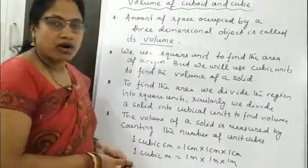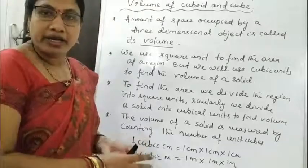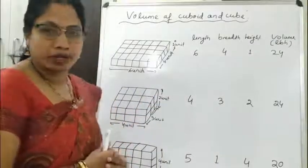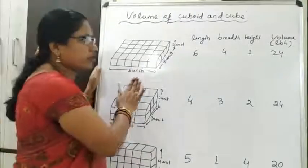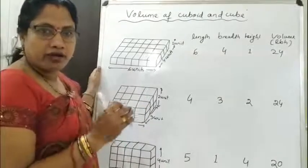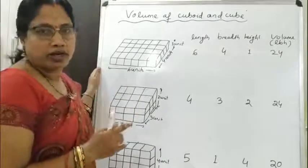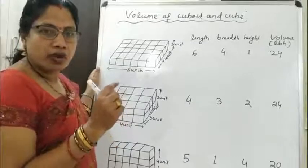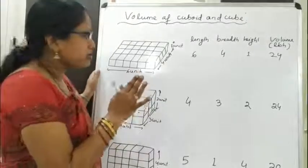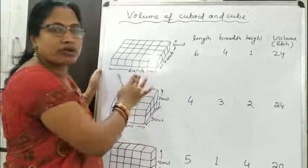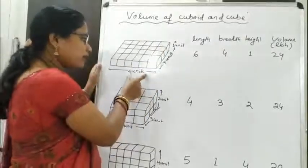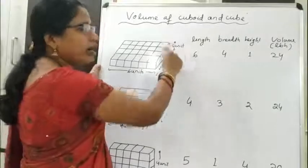Let us discuss how to find the volume of a cuboid by dividing it into unit cubes. In the first figure, I have taken 24 unit cubes. A unit cube is a cube having side or dimension of 1 unit, so the volume of a unit cube is 1 cubic unit. I have arranged all 24 unit cubes to form a cuboid having length 6 units, breadth 4 units, and height 1 unit.